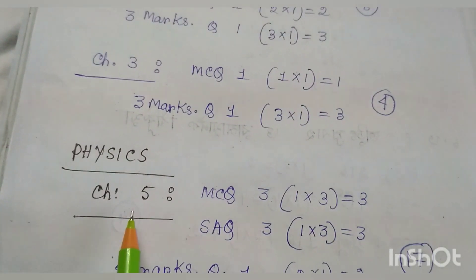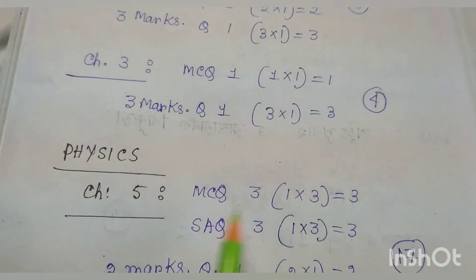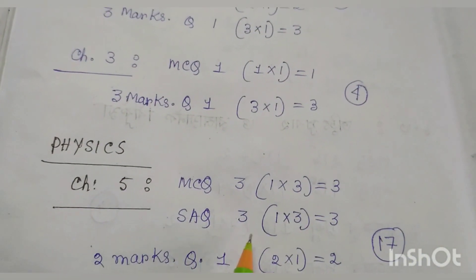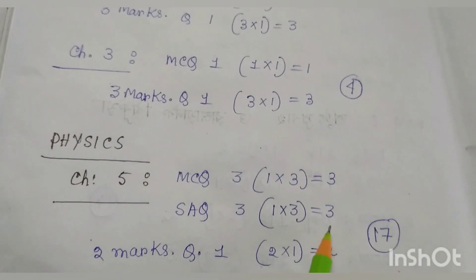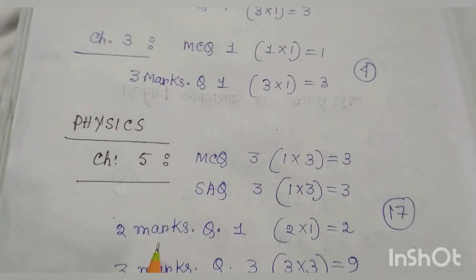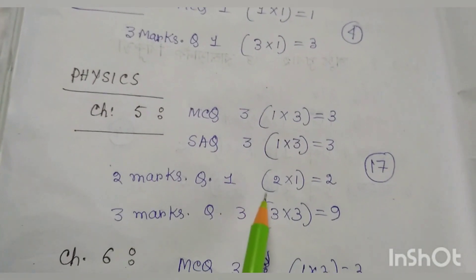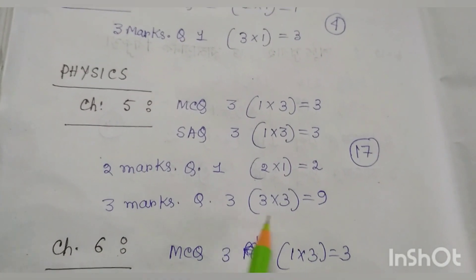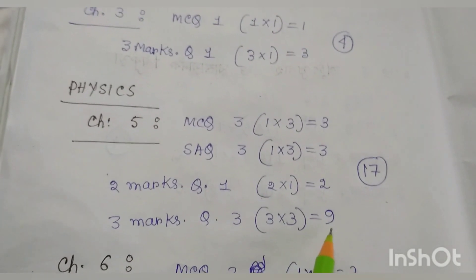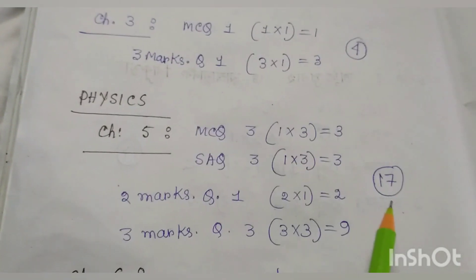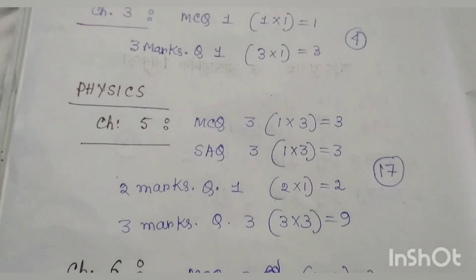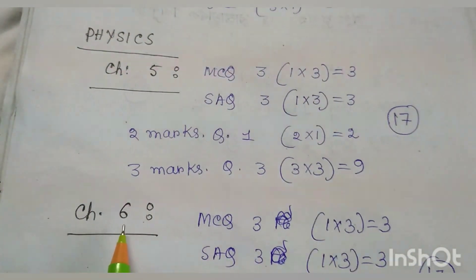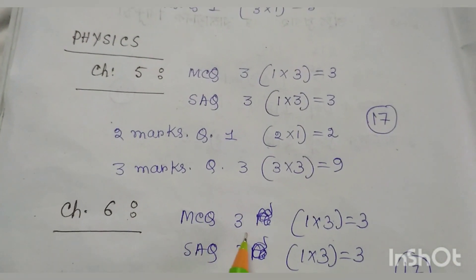Physics Chapter 5 Light — MCQ: 3 questions, 1×3 = 3 marks; SAQ: 3 questions, 1×3 = 3 marks; 2 marks question: 1 attempt, 2×1 = 2 marks; 3 marks question: 3 attempts, 3×3 = 9 marks. Total 17 marks. So Light is a very very important chapter.